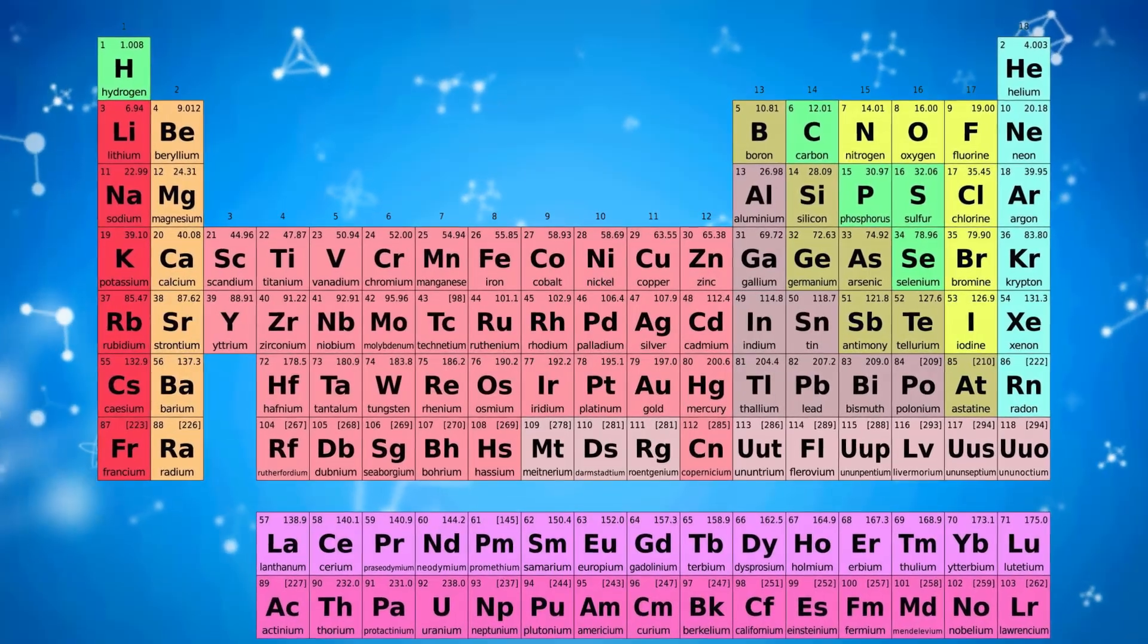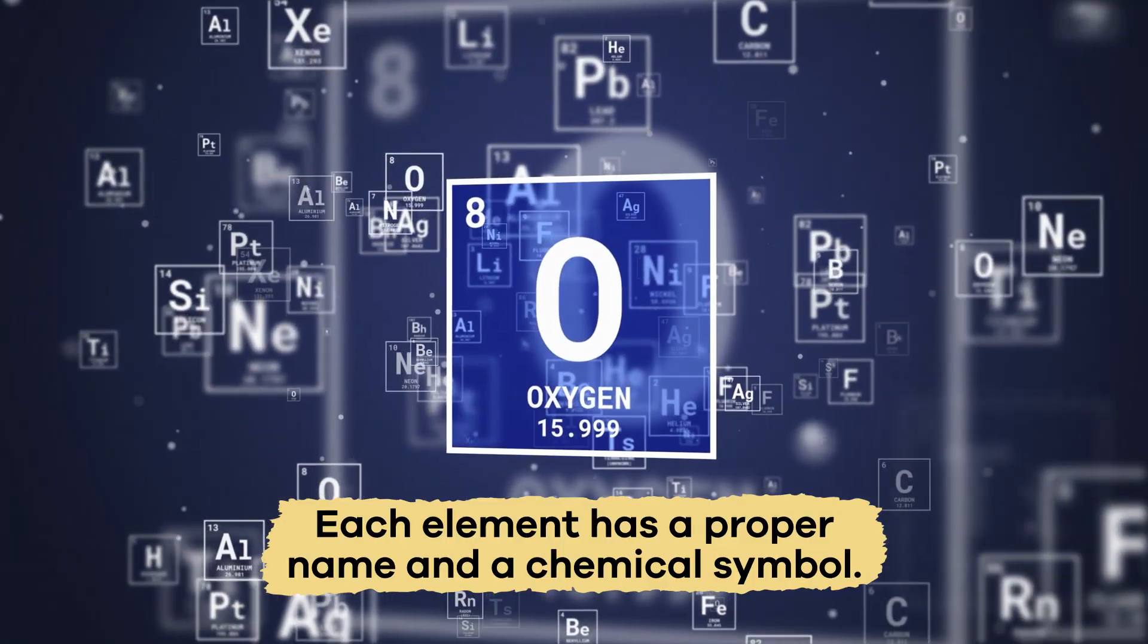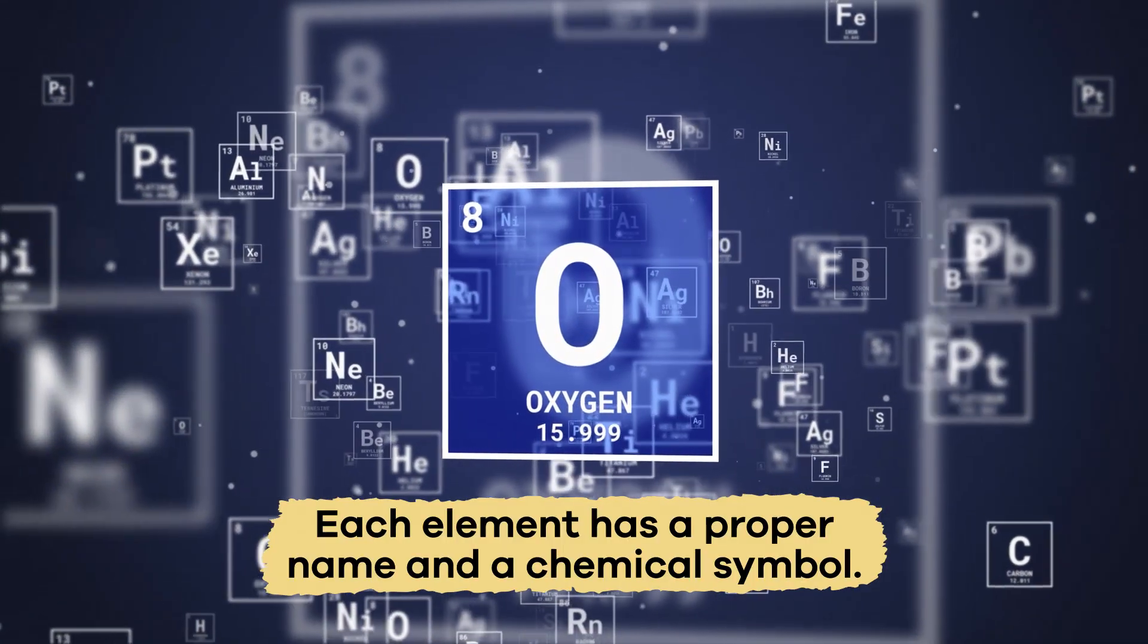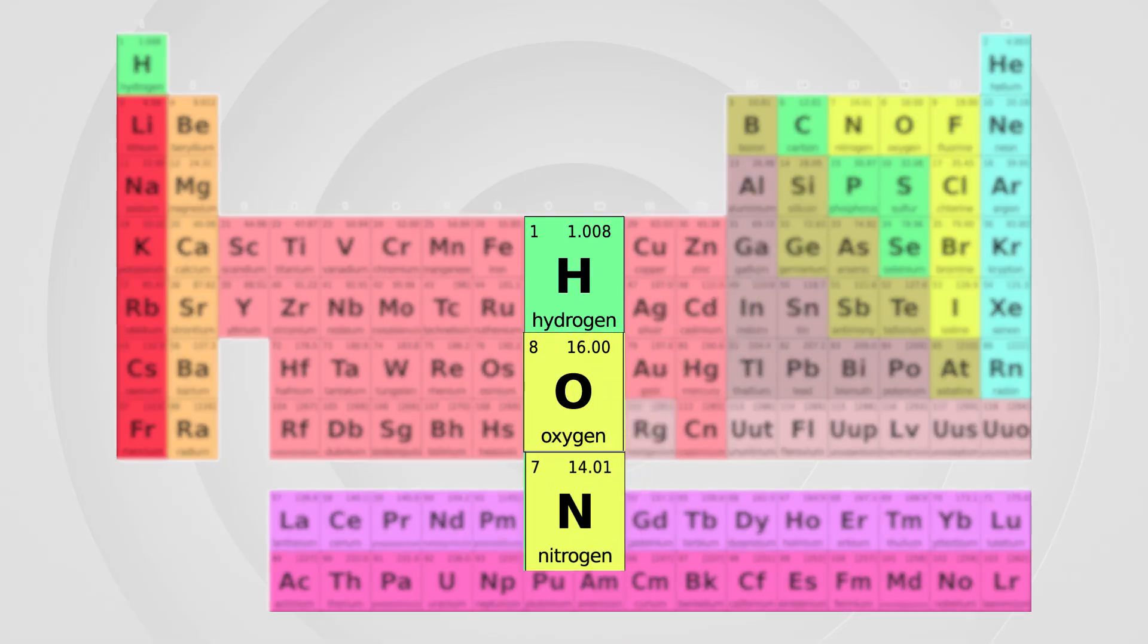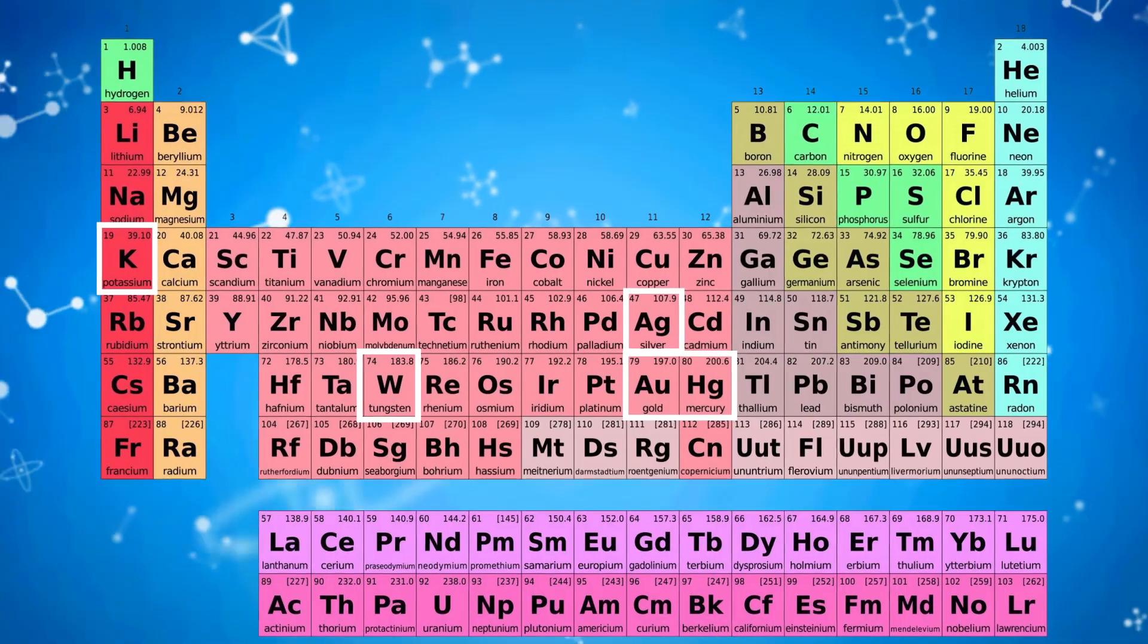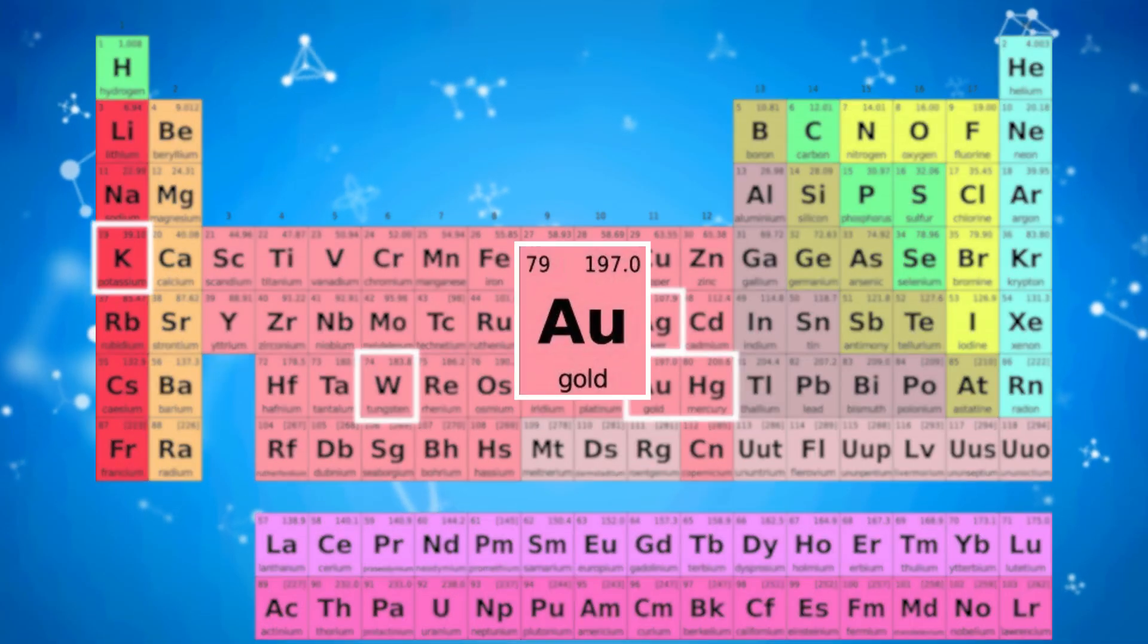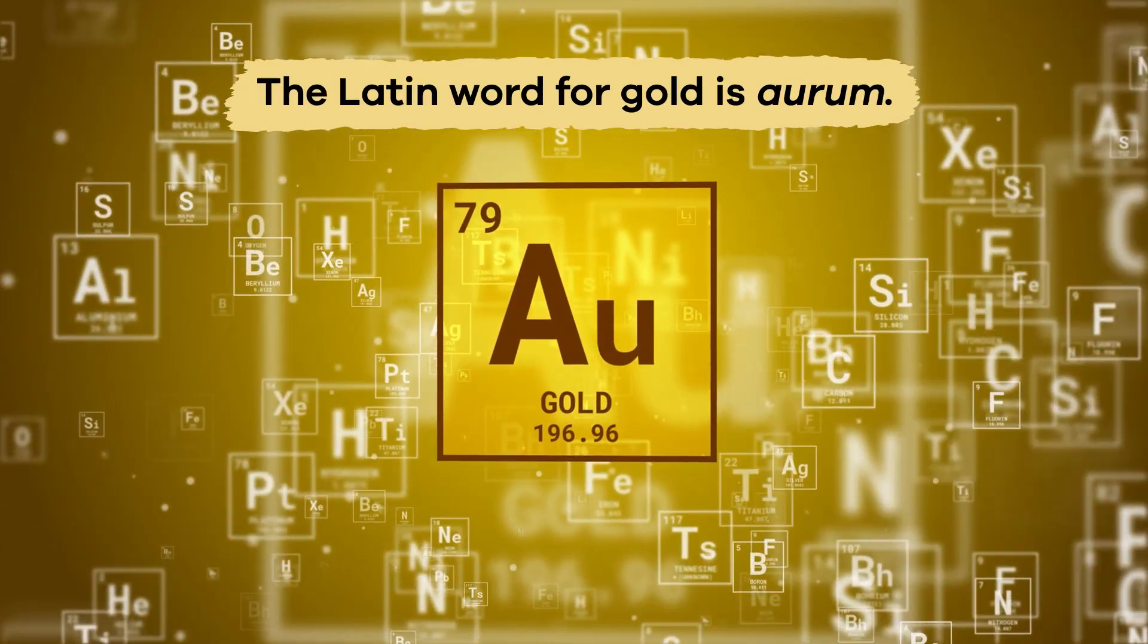Now let's break things down and learn how to read and understand the periodic table. First, each element has a proper name and a chemical symbol. Most of the symbols begin with the same letter as the element's name, but there are some exceptions. For example, the chemical symbol for gold is Au because the Latin word for gold is aurum.